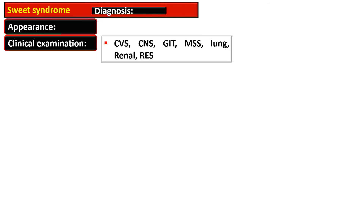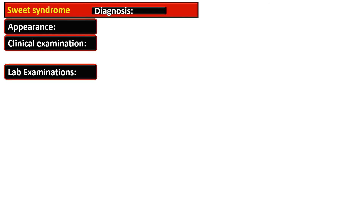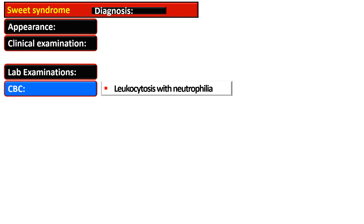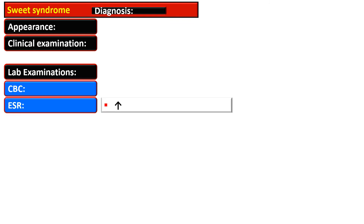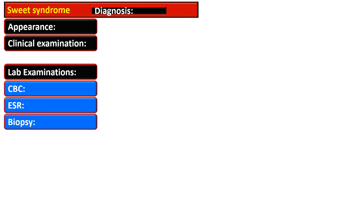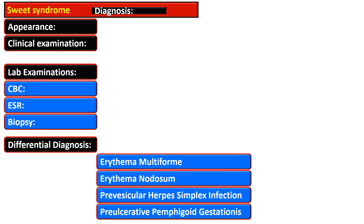The general appearance of the patient in Sweet syndrome is ill-looking. The disease is diagnosed with careful clinical examination for involvement of the CNS, CVS, GIT, musculoskeletal system, lungs, renal system, and reticuloendothelial system. Laboratory examinations are important: CBC shows leukocytosis with neutrophilia and increased ESR. Diagnosis is confirmed on biopsy and should be differentially diagnosed from erythema multiforme, erythema nodosum, perivesicular herpes simplex infection, and pre-ulcerative pemphigoid gestationis.